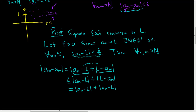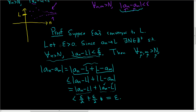Intuitively, we can do this because the distance between L and a_m is the same as the distance between a_m and L. Now, we know little n is bigger than capital N, so this first term is less than epsilon over 2. Likewise, little m is bigger than capital N, so this term is also less than epsilon over 2. And epsilon over 2 plus epsilon over 2 equals epsilon. So we started with epsilon greater than 0, found a positive integer capital N, such that for all little n and little m bigger than capital N, the distance between a_n and a_m is smaller than epsilon. And so we proved that every convergent sequence is Cauchy.